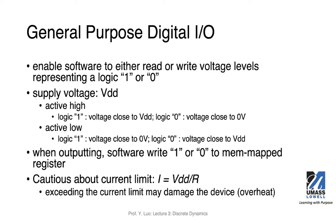General purpose IO, or GPIO, enables software to either read or write digital voltages representing a logic 1 or 0. We often use VDD or VSS to refer to the supply voltage. Depending on the microcontroller, it could be 5 volts or 3.3 volts. Either way, you need to understand what we mean by active high or active low.